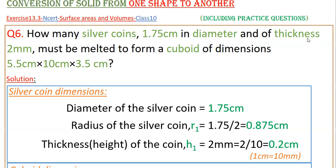Here thickness is the height and diameter of the silver coin is given as 1.75 centimeters. Therefore radius of the silver coin R1 equals diameter by 2, that is 1.75 by 2, which equals 0.875 centimeters, and thickness or height H1 equals 2 mm.